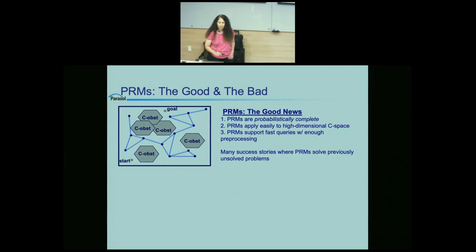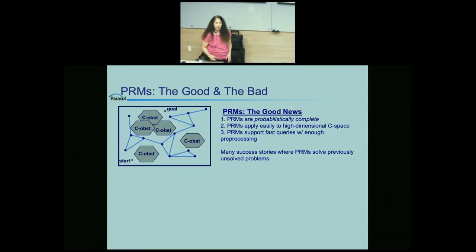When it was originally developed, this method was very revolutionary — it enabled applying motion planning algorithms to very high-dimensional problems like robotic manipulators with many degrees of freedom, and could support queries quickly after good preprocessing. There were many success stories where the probabilistic roadmap methods solved problems that simply couldn't be solved before. However, there are cases where this method doesn't work well. Because of the uniform sampling, if I want to move from the lower left to the upper right, my roadmap needs to be connected through all areas including very narrow ones.